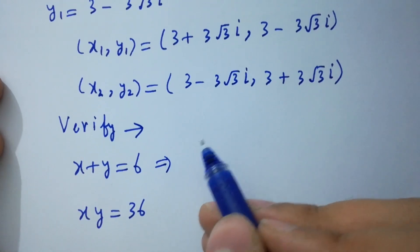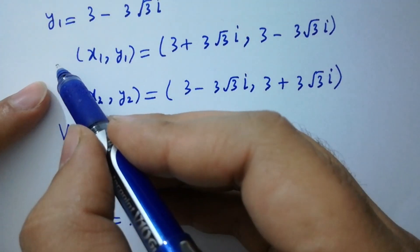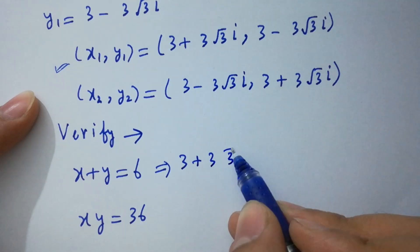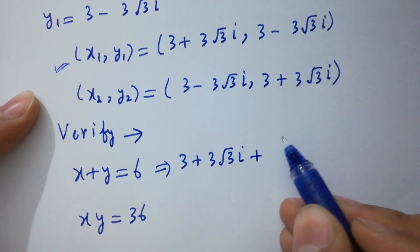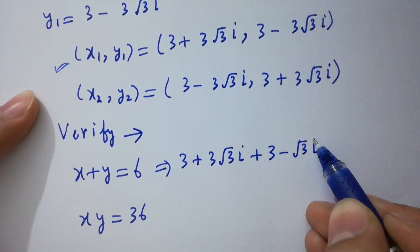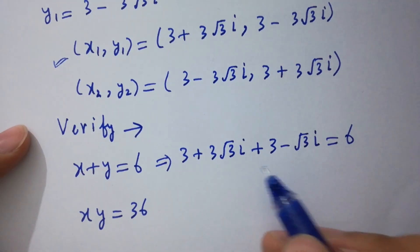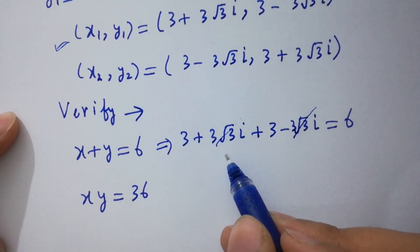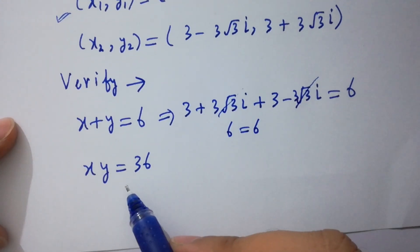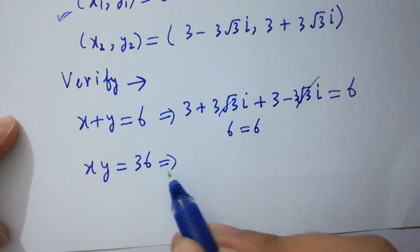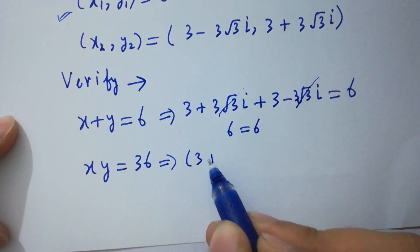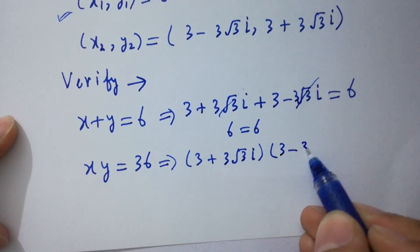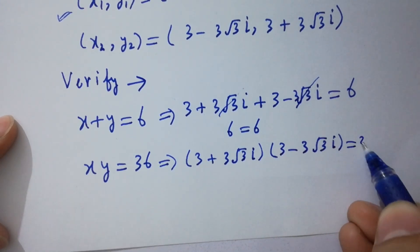Putting the values of x and y: (3 plus 3 square root of 3 i) plus (3 minus 3 square root of 3 i) equals 6. Here, the 3 square root of 3 i terms cancel each other. We have 3 plus 3 equals 6, confirming 6 equals 6. For the second check, x times y equals (3 plus 3 square root of 3 i) times (3 minus 3 square root of 3 i) equals 36.